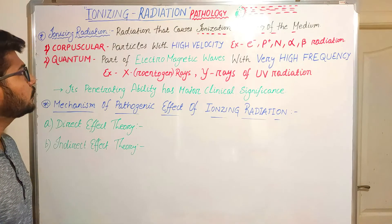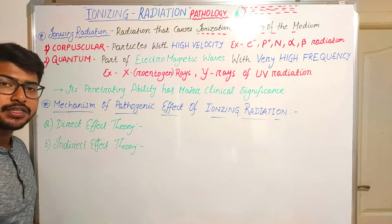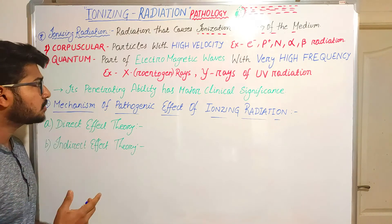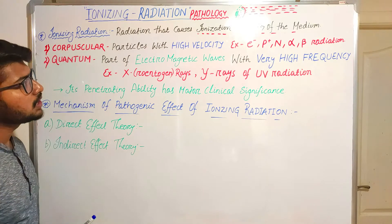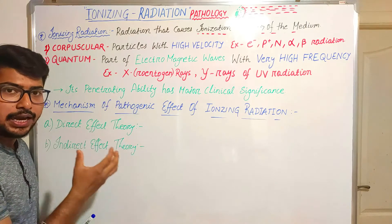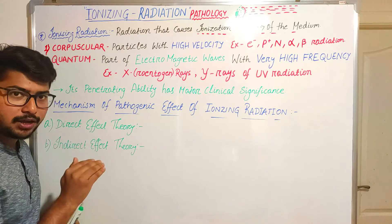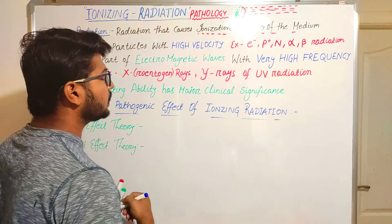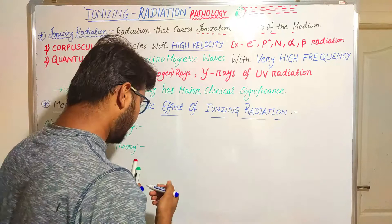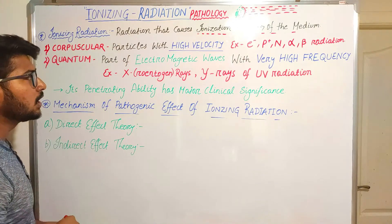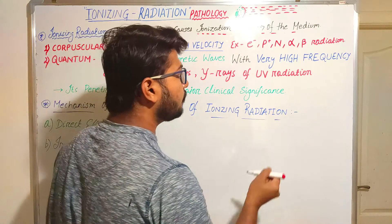Next we discuss the types of ionizing radiations. According to their nature, ionizing radiations are divided into two types: the first is corpuscular and the second is quantum. Corpuscular means particles with high velocity — the radiating particles move through the medium with specifically high velocity. Examples include electrons, protons, neutrons, alpha, and beta radiations.